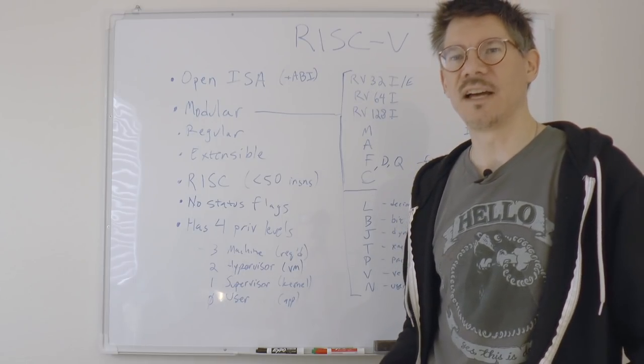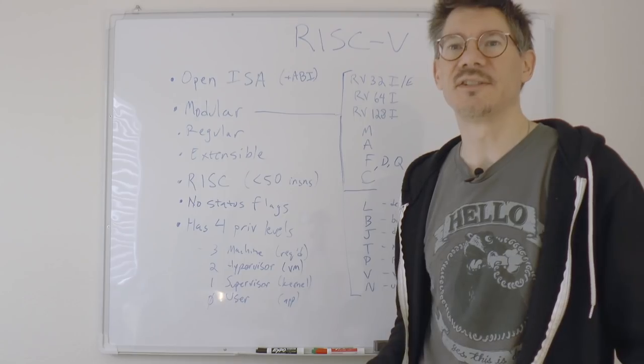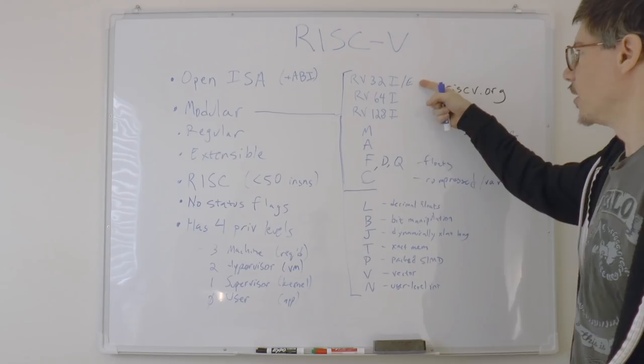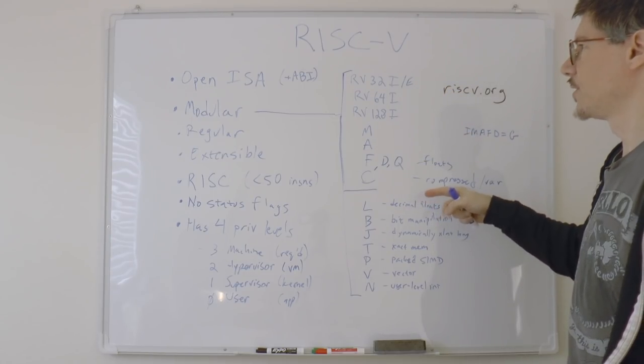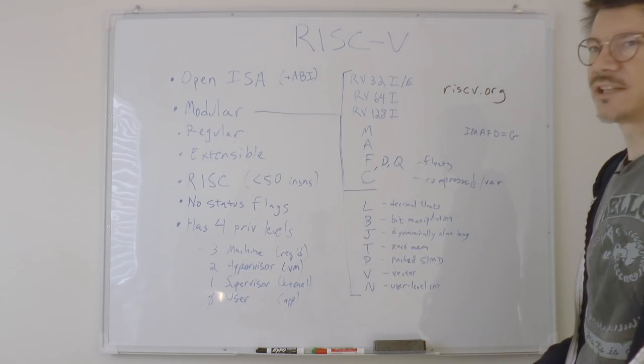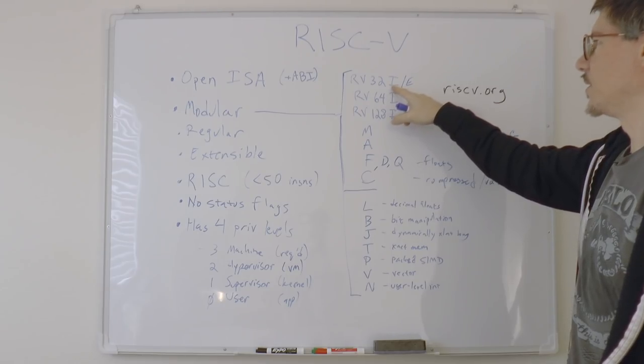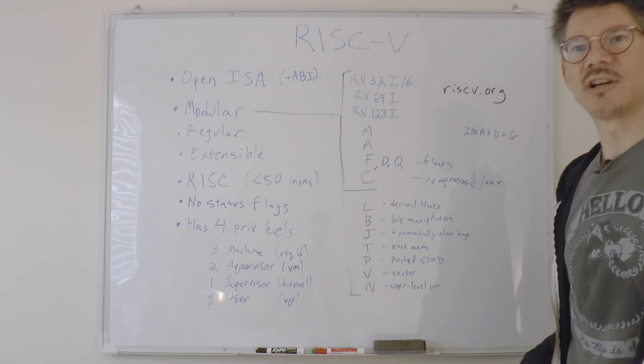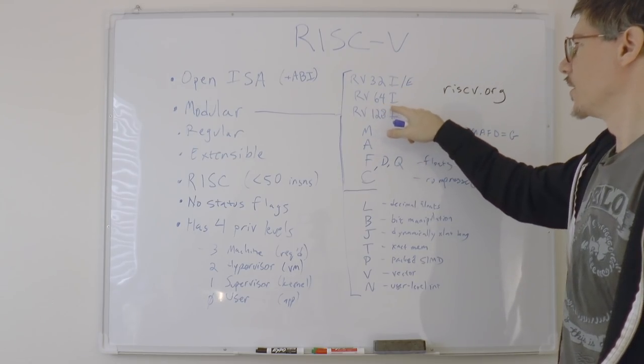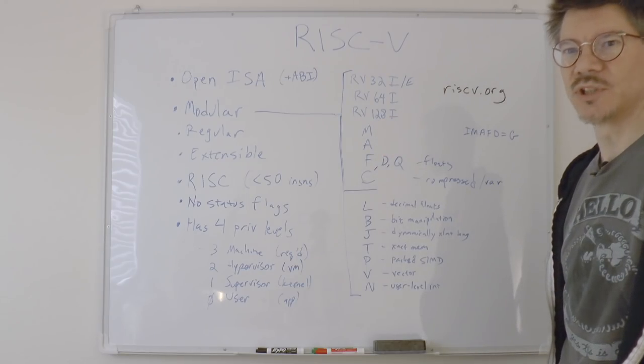Now the nice thing about the RISC-V ISA, aside from its being open and completely license-free, is that it's modular. So there are a bunch of modules that you can implement for a RISC-V processor. The only required module is the I, which is the integer instruction set. There's a 32-bit integer instruction set, a 64-bit which is optional, and a 128-bit which is also optional.